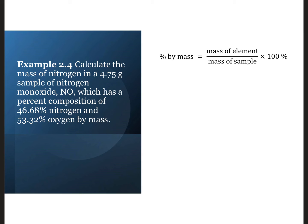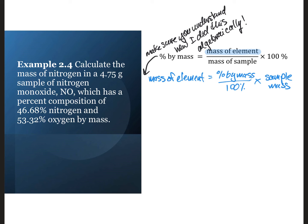Calculate the mass of nitrogen in a 4.75 gram sample of nitrogen monoxide, NO, which has a percent composition of 46.68% nitrogen and 53.32% oxygen by mass. To do this, we need to rearrange the equation for percent by mass to solve for the mass of the element. The mass of the element equals percent by mass divided by 100% times the mass of the sample. Therefore, the mass of nitrogen equals 46.68% divided by 100% multiplied by 4.75 grams to get 2.22 grams nitrogen.